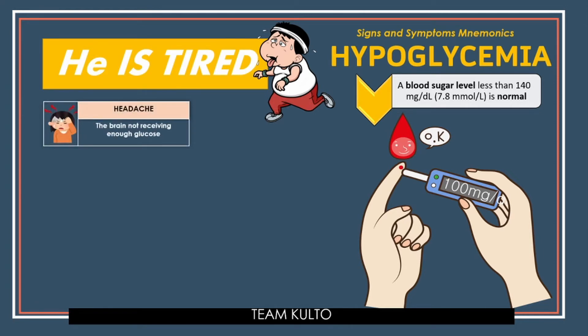H is for Headache. The brain not receiving enough glucose causes most of the symptoms of hypoglycemia, which include headache, migraine, confusion, nausea, sweating, faintness, and hypothermia. If hypoglycemia is very severe and prolonged, it can even cause loss of consciousness and death — coma — although this is very rare. If not addressed promptly, it can cause death in the most severe cases.